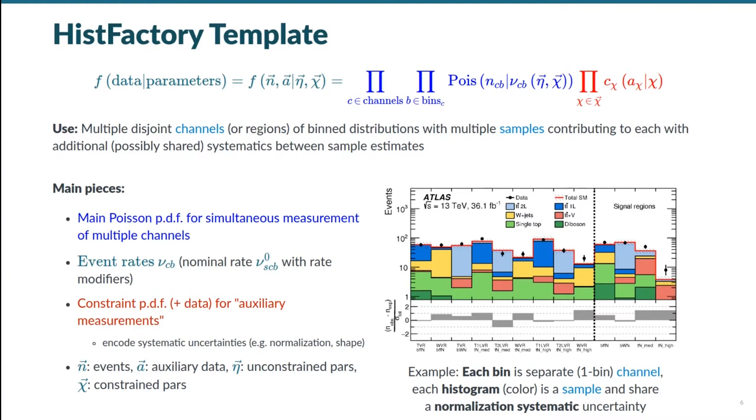When we break down what the HistFactory template is, we see it has a simple form, though here we do need to introduce some terminology, the terms channel and sample. Here, a channel just means a particular selection criteria for the analysis. If you allow me to simplify to avoid giving an aside lightning talk on the standard model, this might mean requiring seeing two particles of one type and a third of another in the detector, and that their combined energy lies within a specific range.